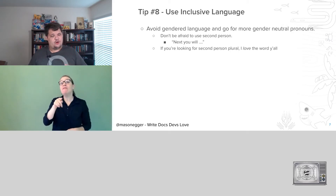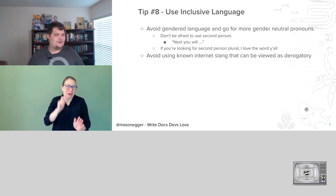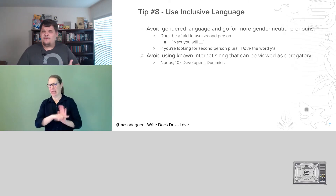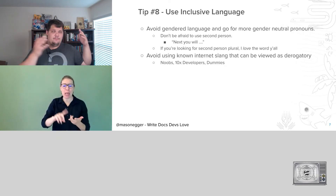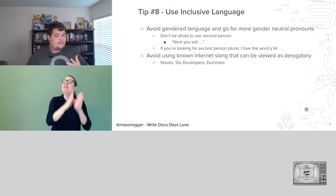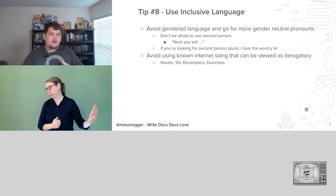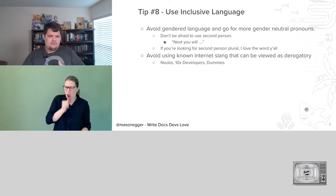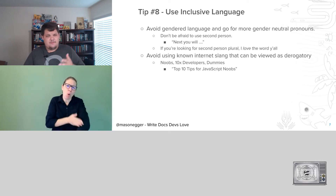Avoid using internet slang that can be viewed as derogatory. Some statements you may not know might make people feel uncomfortable or unwelcome — words like 'noobs,' '10x developers,' 'dummies.' There's an entire series of books called 'blank for dummies,' and while some people love those books, some people automatically shut them out because they don't like being called a dummy or a noob. Avoid this kind of internet slang — there is nothing to be gained from using it and everything to be lost. Why was 'noobs' a better choice than 'beginners'? It wasn't.